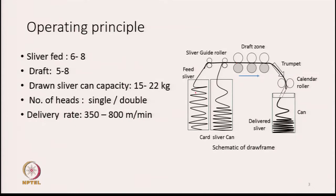From the input slivers — for a given head there could be 8 of them — the slivers are lifted from the can. The feed sliver cans are actually card cans, so for a given head there could be 8 cans. From 8 cans, 8 slivers will be lifted. These cans are placed behind the machine; slivers are lifted and there are guide rollers which guide the slivers towards the drafting zone. This is a cross-sectional view of the machine.